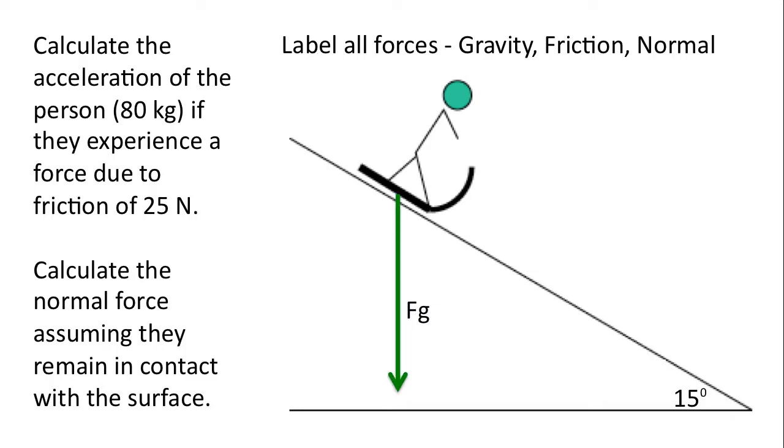Gravity always acts downwards. Friction opposes the motion. The normal force acts in this direction. Now, why does it act in that direction? Well, normal in mathematics means perpendicular. In this case, perpendicular to the surface.